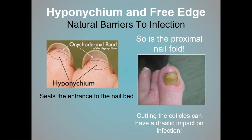The eponychium is the proximal portion we know as the cuticle area. The hyponychium is the distal portion that prevents anything from entering underneath the nail — it's a natural barrier to water, moisture, and infection. Whenever the onychodermal band of the hyponychium is irritated, such as from excessive cleaning of that area, it can cause a separation between the nail bed and nail plate, losing that natural barrier and making infection easy to enter through that area.